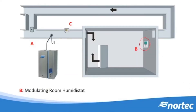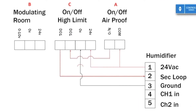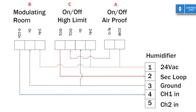Finally, the modulating room humidistat wires to the humidifier's modulating loop. These devices have internal circuitry and a visual display, so they need power to operate. We use 24 volts AC from the humidifier, pin 1, wired to the respective terminal on the humidistat, and ground, pin 3, to the respective ground pin. We then wire the modulating conductor, labeled 0 to 10 volts DC, to the humidifier's channel 1 modulation input, pin 4. Your wiring is now complete.